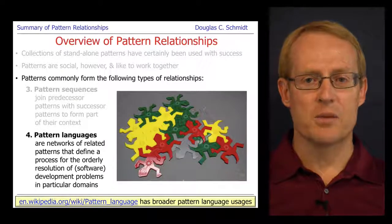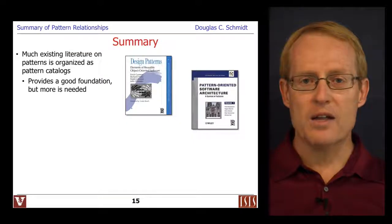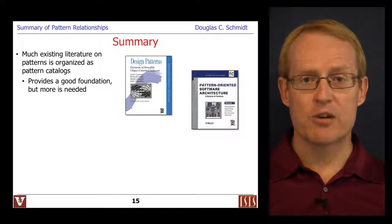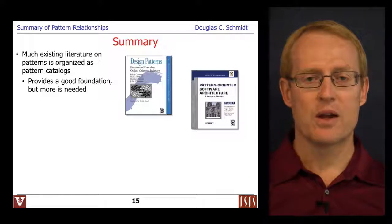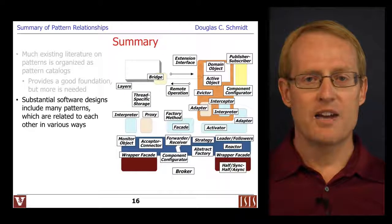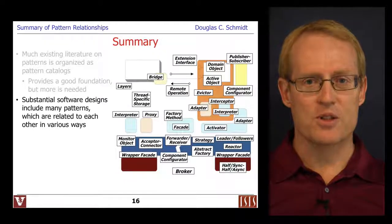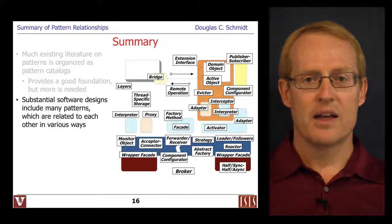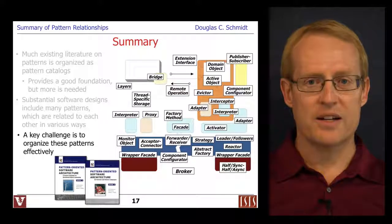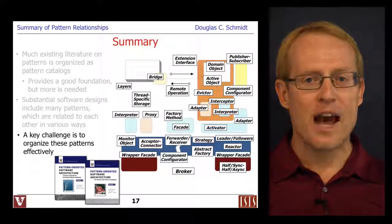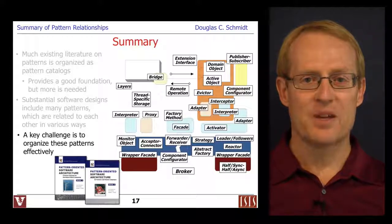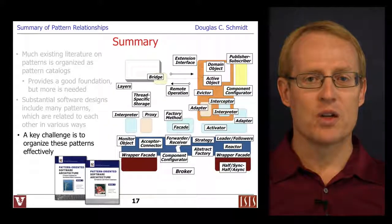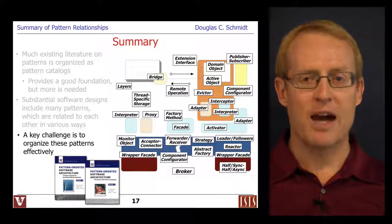To summarize this part, much of the existing literature on patterns organizes them in the form of pattern catalogs, which provides a great foundation. But we need more, because substantial software designs are composed of many patterns. It's our job as architects, designers, programmers, and educators to figure out how to effectively organize these patterns to make them easier to learn and easier to apply. Throughout the rest of this module, you'll get a chance to look at different ways to apply different types of pattern relationships.